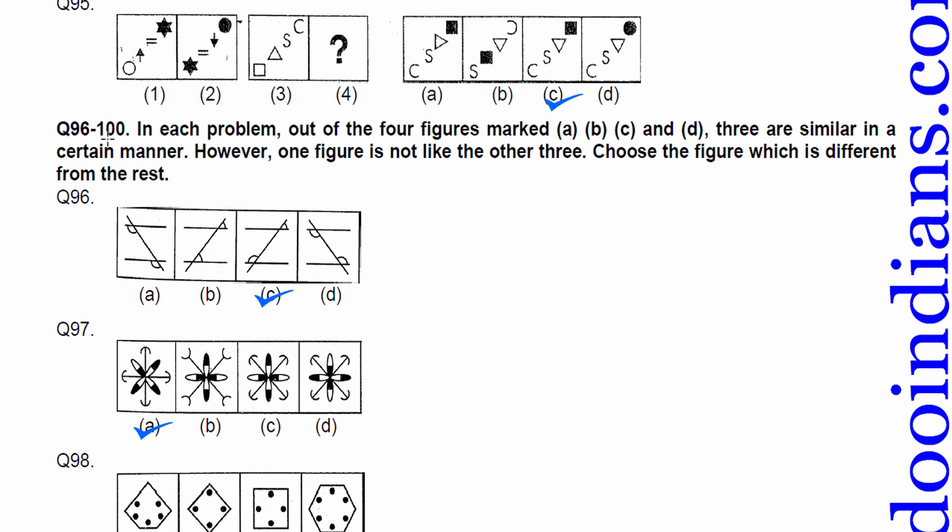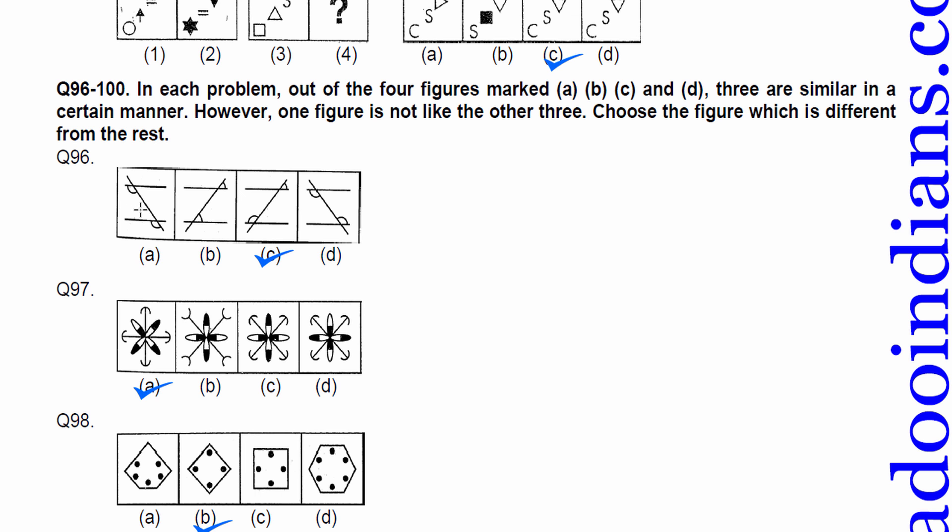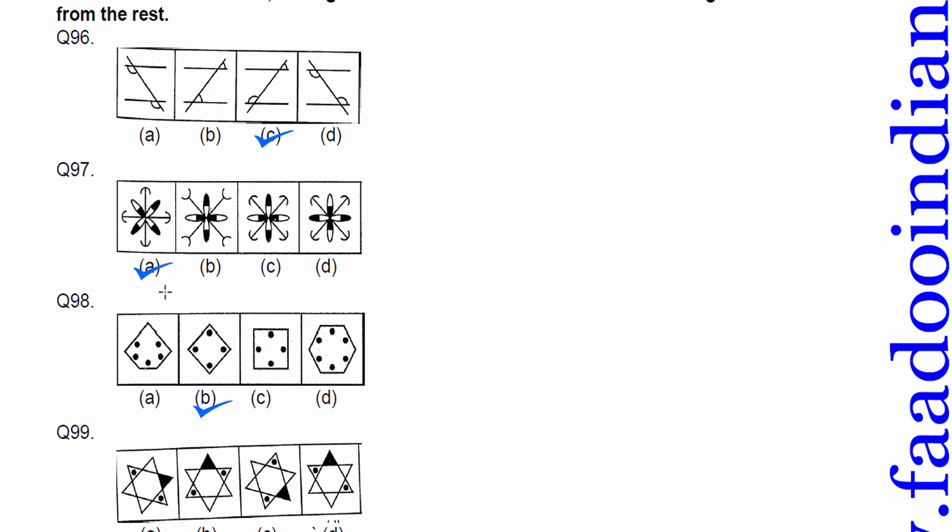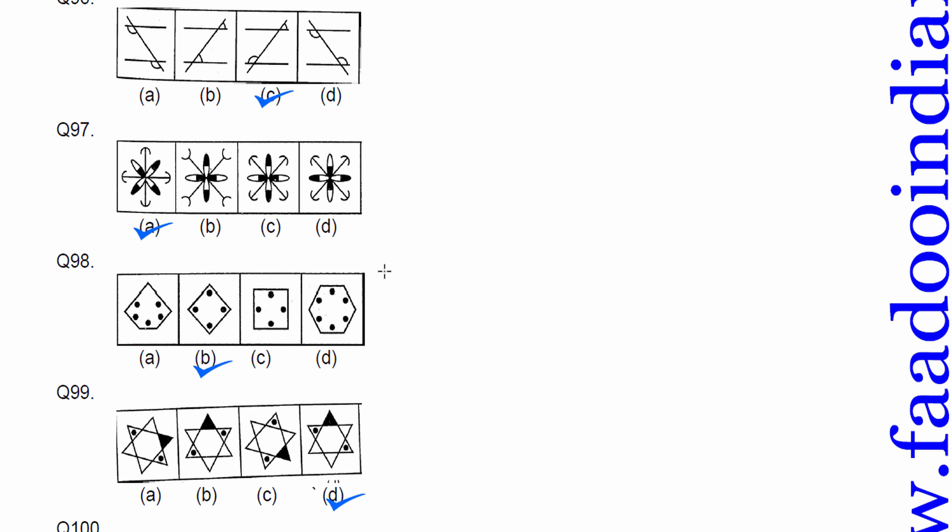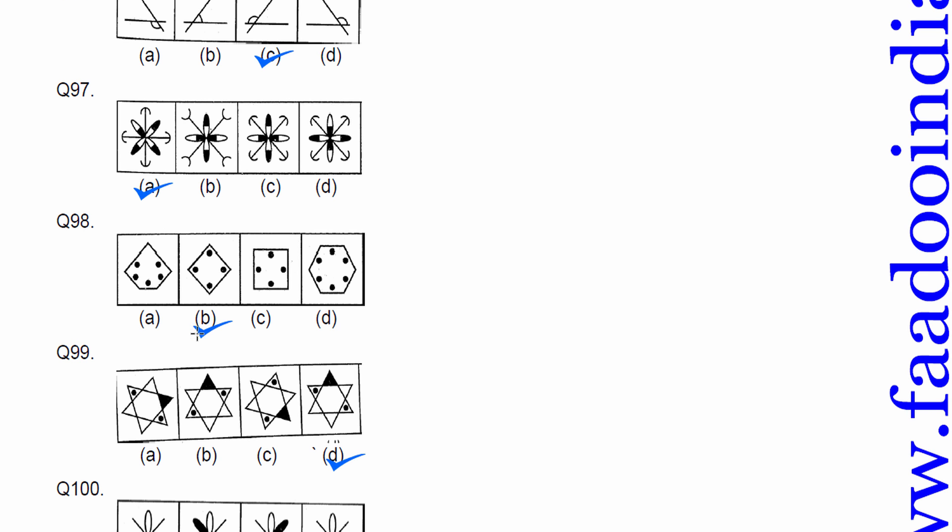You can choose the figure which is different from the rest. Obviously, so here. Parallel lines concept is used. Equal, equal. Here it is not equal. Therefore, C is right option. Again here you can check. These methods of painting. Finding the odd one out of it. Here dots are in centers. So, that was your question people.